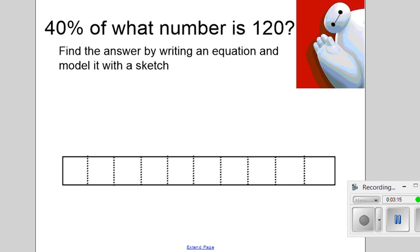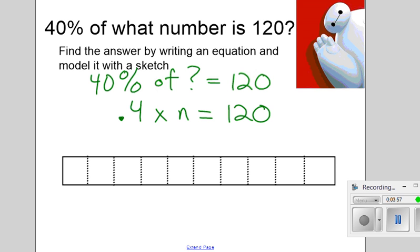Example number two: 40% of what number is 120? It says to find the answer by writing an equation and model it with a sketch. Let's work on this together. 40% of our unknown equals 120. The equation of course would then say 0.4 times an unknown, and I'm going to use the letter n, equals 120. And then I would be able to solve with that equation.